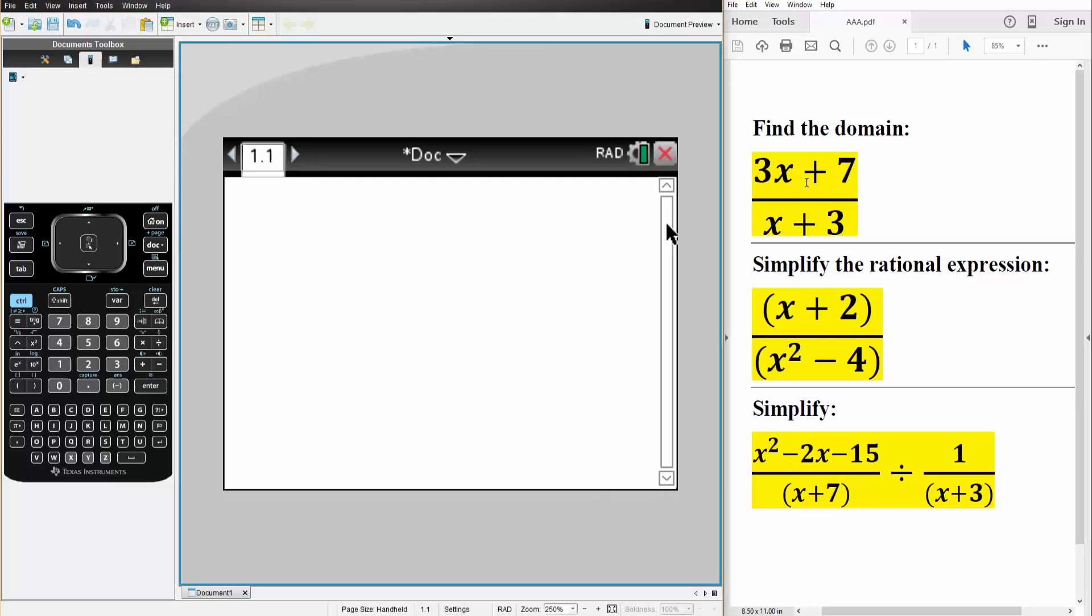So first thing is to get the domain. We say D-O-M-A-I-N, and if you notice, right now without the N it's italicized because there's no command for domain, but if I add the N there's a command for domain. So now I do a parenthesis, control, division, and we write what we have, so 3x plus 7 divided by x plus 3.